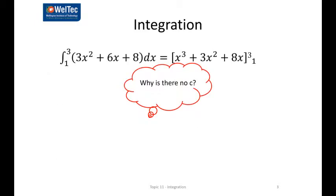Let's have a look at an example. Let's find the integral, and we read this between the limits of 1 and 3, of 3x² + 6x + 8, and I've done the integration, and I'd like you to set it out like that, with square brackets and with the limits at the top and the bottom. Now there's a question there, why is there no c?